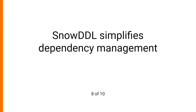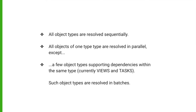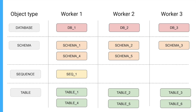Snow DDL implements a very simple dependency management system. All object types are resolved sequentially in a specific order, but all objects within the same type are resolved in parallel, with a few exceptions. For example, Snow DDL creates multiple databases in parallel first, after that it creates multiple schemas in parallel, after that it creates one sequence, and after that it creates multiple tables in parallel. Essentially, all tables are created after all sequences are created.